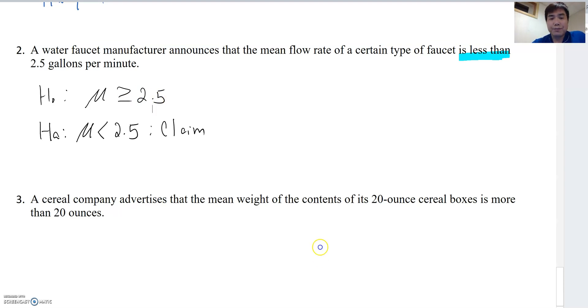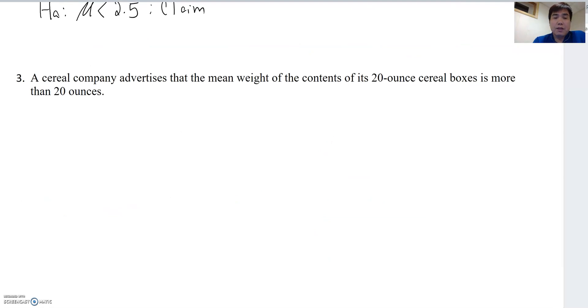Then last one here, number three. A cereal company advertises the mean weight of the contents of its 20-ounce cereal box is more than 20 ounces. Do you see any inequality? Yeah, if you find 'more than,' that's great. Then now it is also one-tail test here.